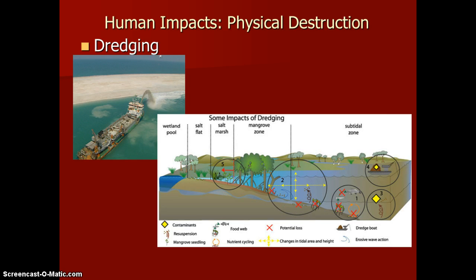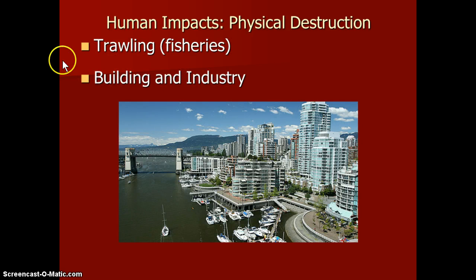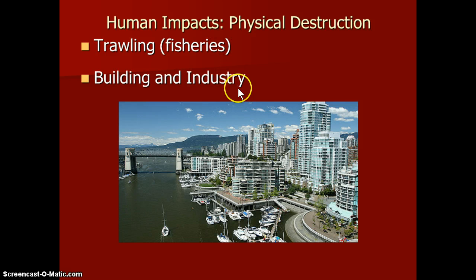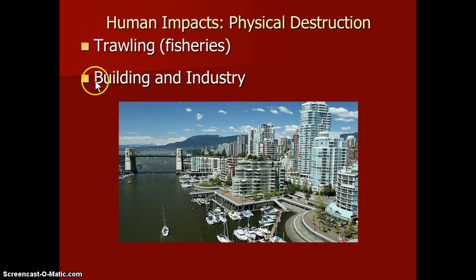There are many other effects — those are just a few. Another pretty destructive process is a fisheries method called trawling, but we'll talk about that in more detail in the next unit when we go over fisheries. Essentially, all of our activities along the coast — we like to live and work on the coast because it's convenient, with access to transportation, exports and imports — mean we have a lot of building and industry on the coast, all of which entails a certain amount of physical destruction to the coast itself.